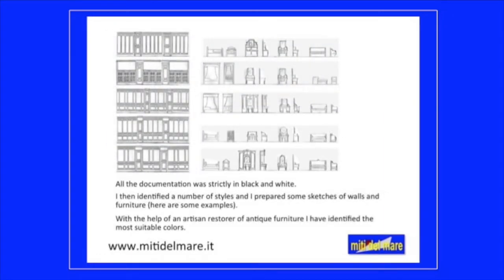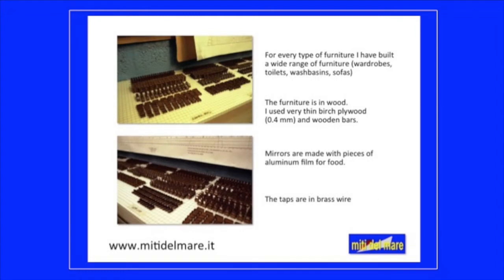All the documentation was strictly in black and white. I identified a number of styles and prepared some sketches of walls and furniture. With the help of an artisan restorer of antique furniture, I identified the most suitable colours. For every type of furniture I built a wide range of pieces: wardrobes, toilets, wash basins, sofas. The furniture is in wood — I used very thin birch plywood, 0.4 mm, and wooden bars. Mirrors are made with pieces of aluminum film for food, and the taps are in brass wire.